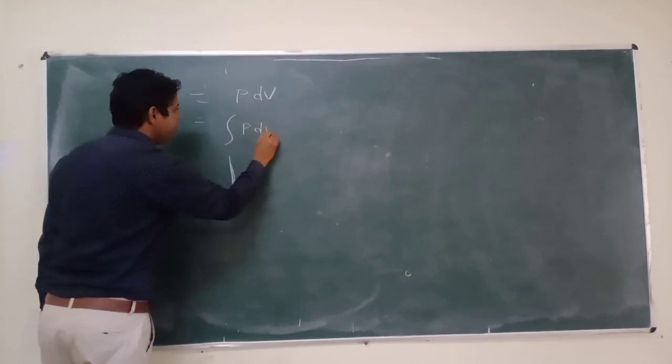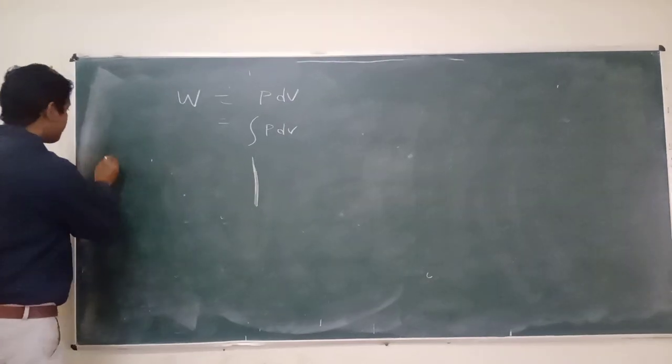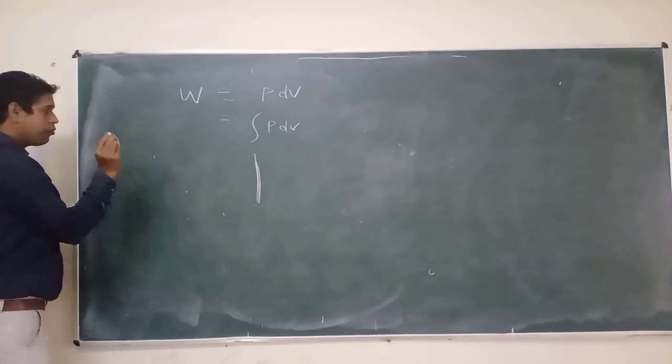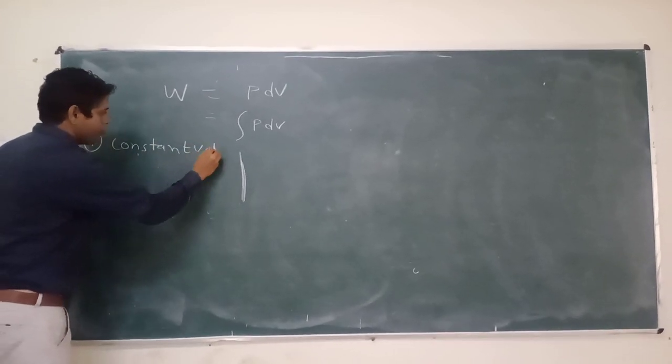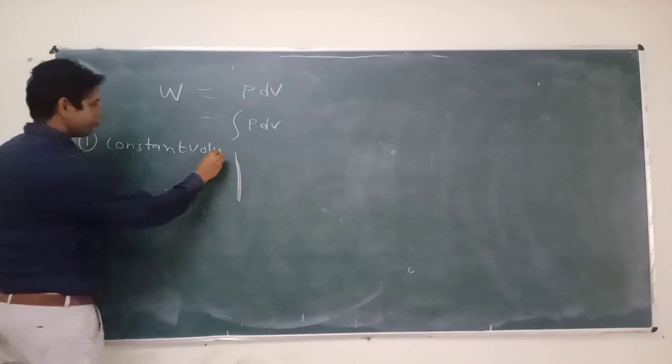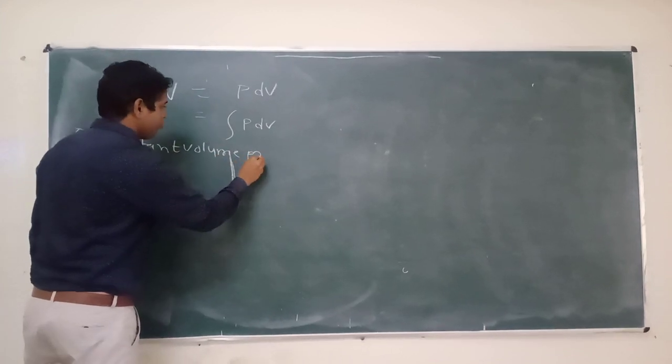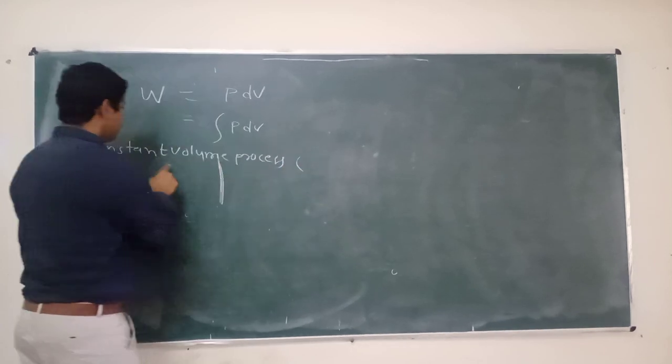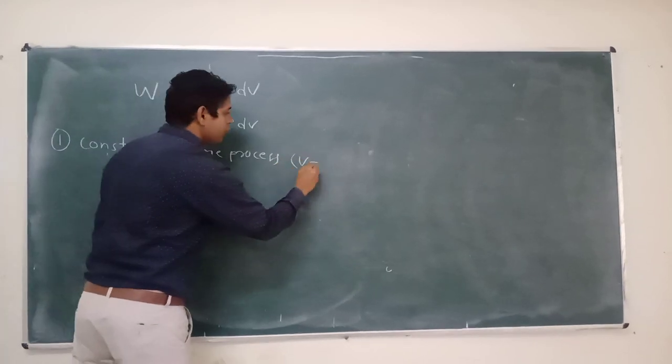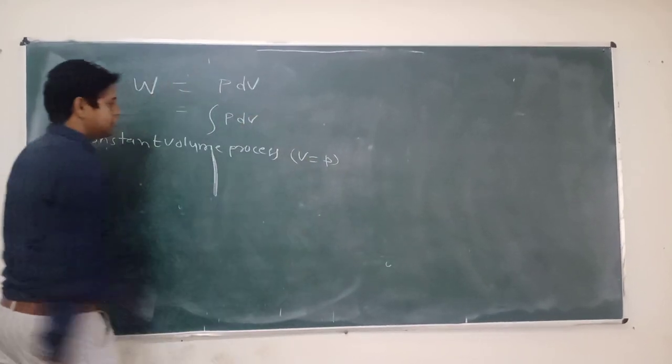For process constant volume process, constant volume, that means V is equal to constant.